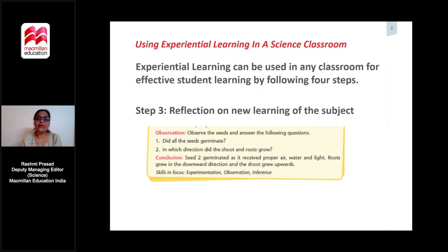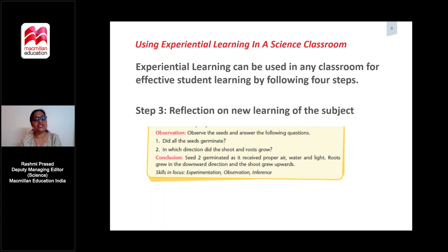The third step is the reflection on the new learning. The students will understand that three conditions are required for seeds to germinate: air, water, and warmth. By doing the experiment they will understand that only one seed germinated because that seed received all three conditions, while the rest were deprived of one condition and hence did not germinate. This is new learning for them.